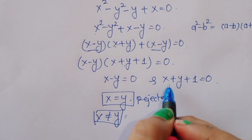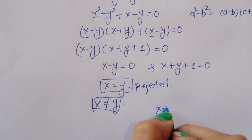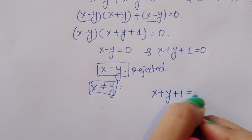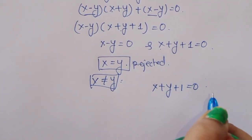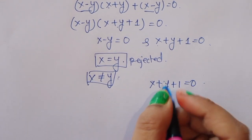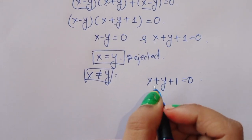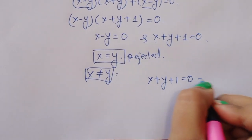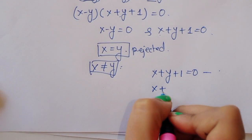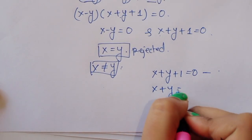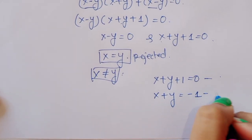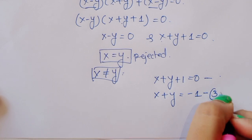The next factor gives x plus y plus 1 equals 0, which we can write as x plus y equals minus 1. This is equation 3.